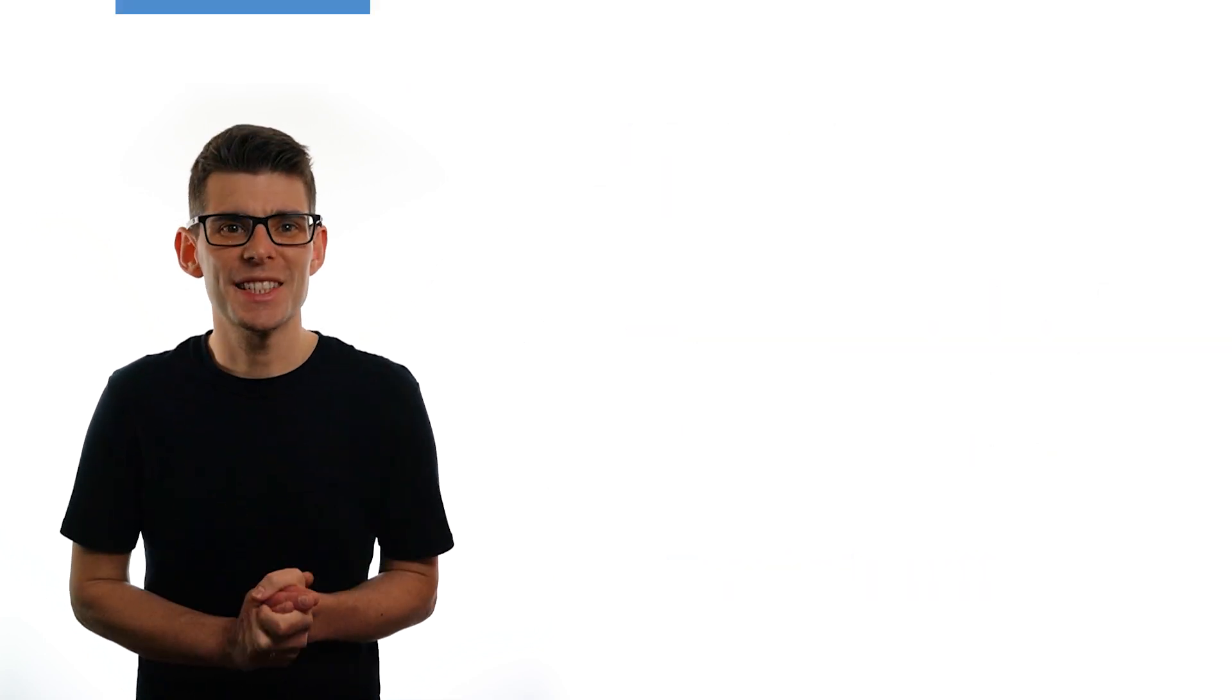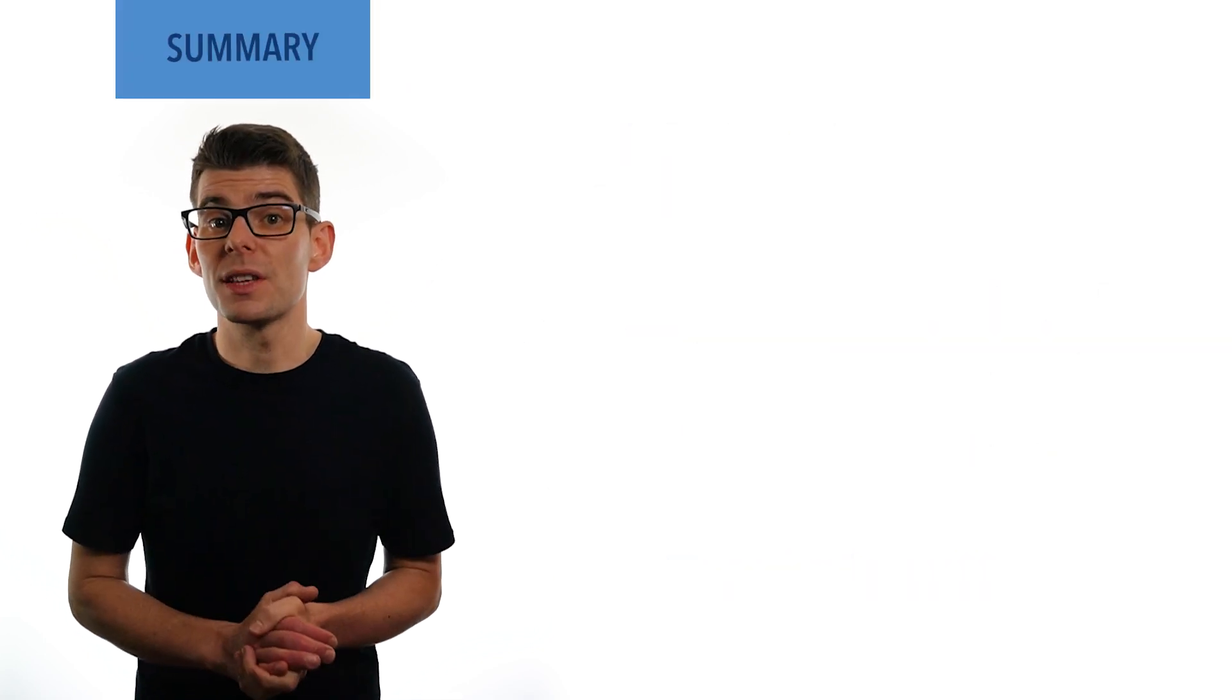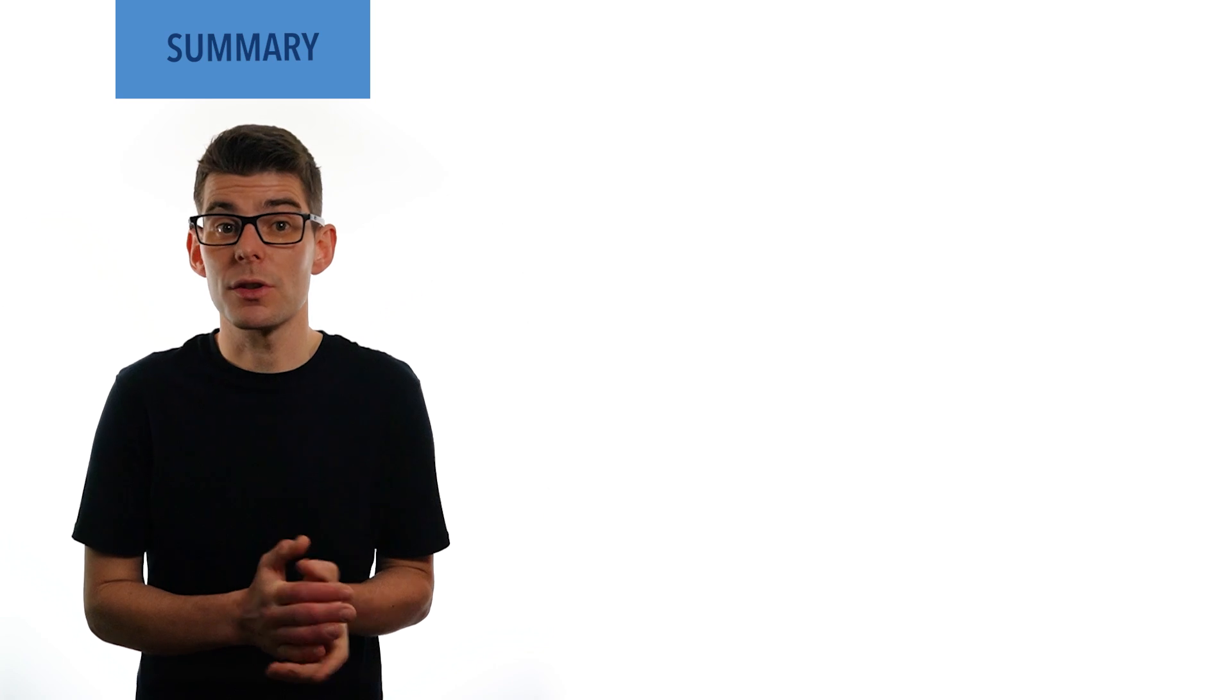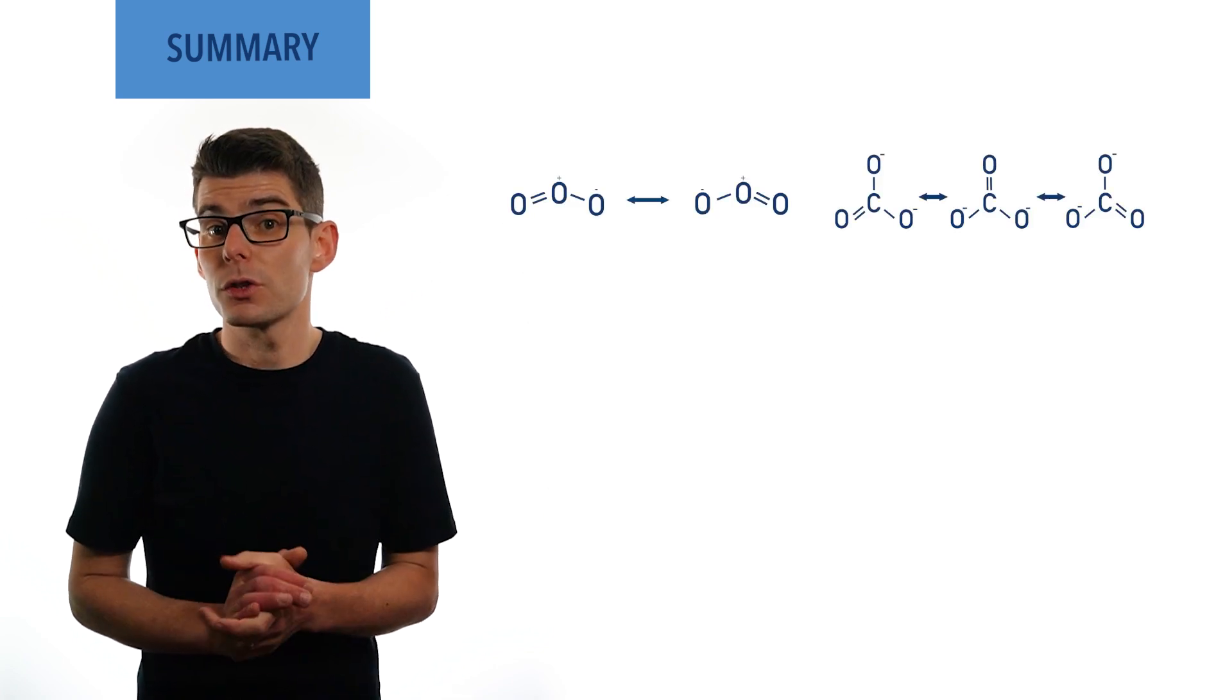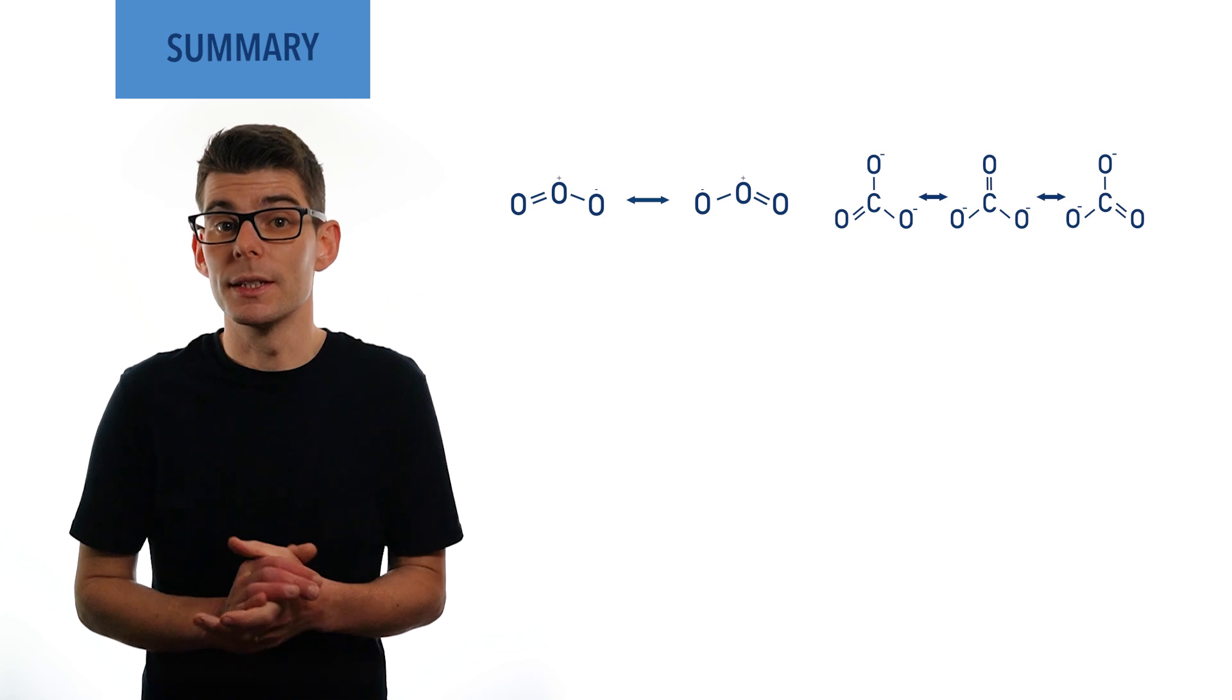So, to summarize, very often there are several ways electrons can be arranged and bonds form in molecules or ions. The different structures possible are called resonance structures.